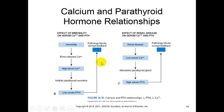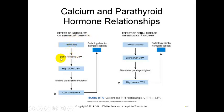The left side of the diagram shows the effect of immobility. If you're confined to your space or unable to move or exercise or exert your muscles, the effects on serum calcium levels and parathyroid hormone are significant. Immobility will cause the bones to release calcium, because your bones are no longer building up due to exercise or stress on the bone. This will cause an increase in blood calcium levels.